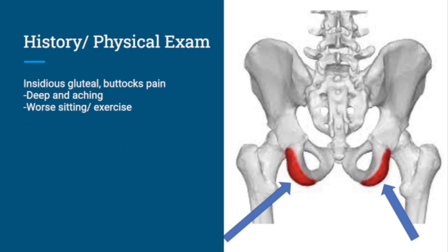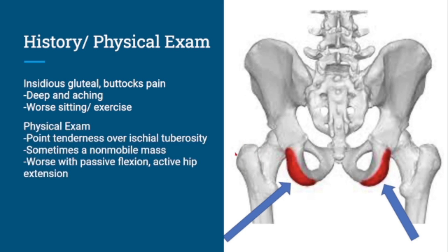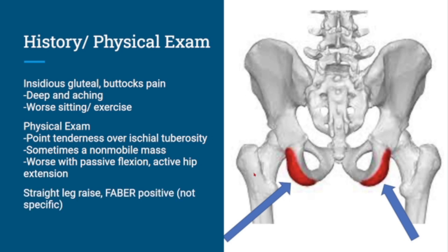On physical exam, patients usually have deep, insidious buttocks pain along the ischial tuberosity, worse with sitting and exercise. They are typically point tender on the ischial tuberosity. Sometimes, as in the case of our patient, you can feel a non-mobile mass, and symptoms are often worse with passive hip flexion and active hip extension.